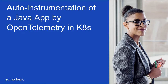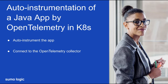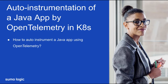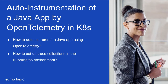Hi, my name's Ana and I'm an instructional designer at Sumo Logic. To set up tracing and collect the trace data of the transactions on an app, we'll need to auto-instrument the app and connect it to the OpenTelemetry collector and then to the trace source of the hosted collector in Sumo. These last two steps are automatically configured by Sumo if we use the Helm chart for Kubernetes. In this video, I'll walk through the auto-instrumentation process of a Java app using OpenTelemetry for Kubernetes, and demonstrate how to set up trace collections for the Java app in the Kubernetes environment and trace the transactions in Sumo Logic.